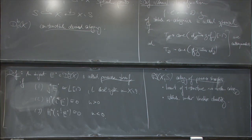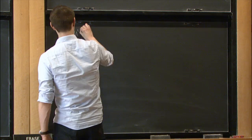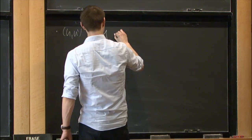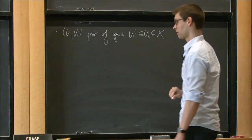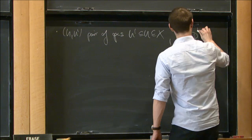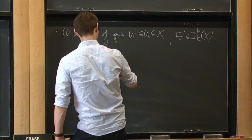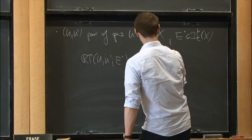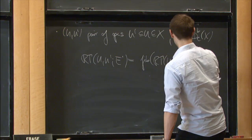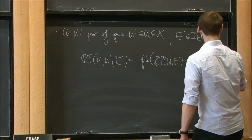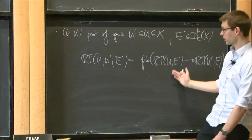Now we introduce some terminology to reformulate this definition. Let u, u-prime be a pair of opens with u-prime inside u inside x, and let E-dot be an object in the constructible derived category. We introduce notation for the relative cohomology with coefficients in E: R-gamma(u, u-prime) with coefficients in E is the fiber — or the cone shifted by one — of the restriction map from R-gamma-u with coefficients in E to R-gamma-u-prime with coefficients in E. This is sections on u with support in the complement of u-prime.